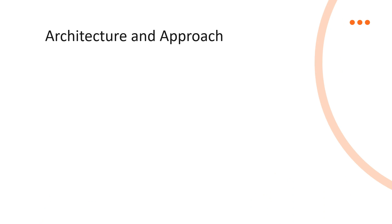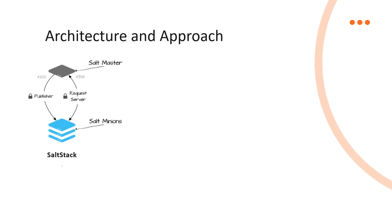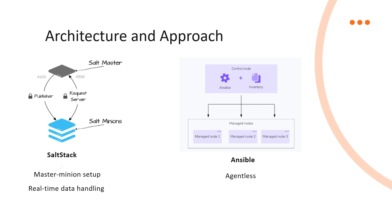Let's deep dive into the architecture. SaltStack uses a master-minion setup where the master manages a fleet of minions. This is great for scaling across thousands of servers and handling high-frequency events. SaltStack is designed to push configurations from the master to minions and can handle real-time data due to its event-driven nature. Ansible, on the other hand, is agentless — you don't need to install any software on the target machines. It uses SSH or WinRM to communicate with the servers, making it lightweight and easy to set up, especially in environments where you want to minimize dependencies.